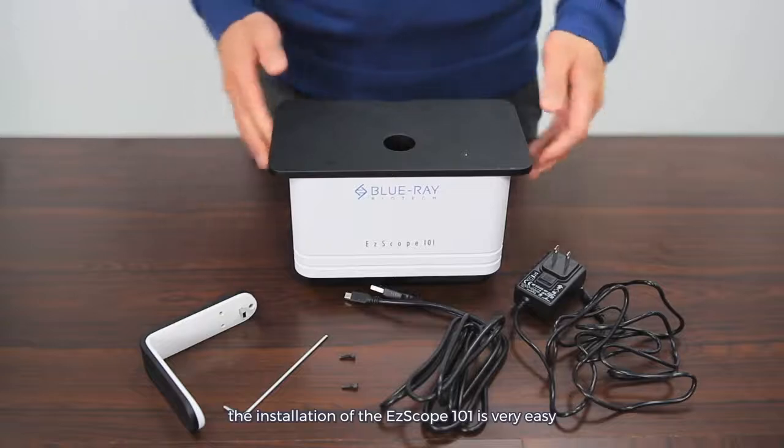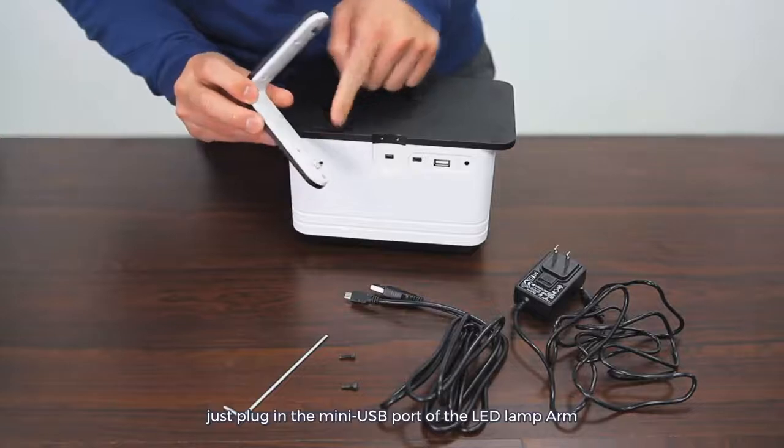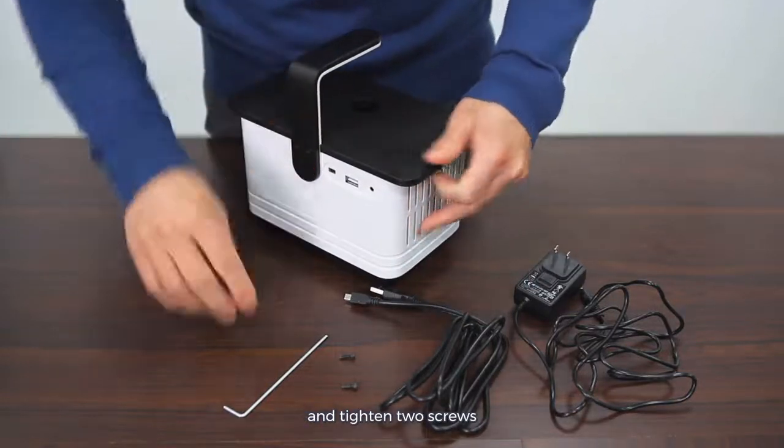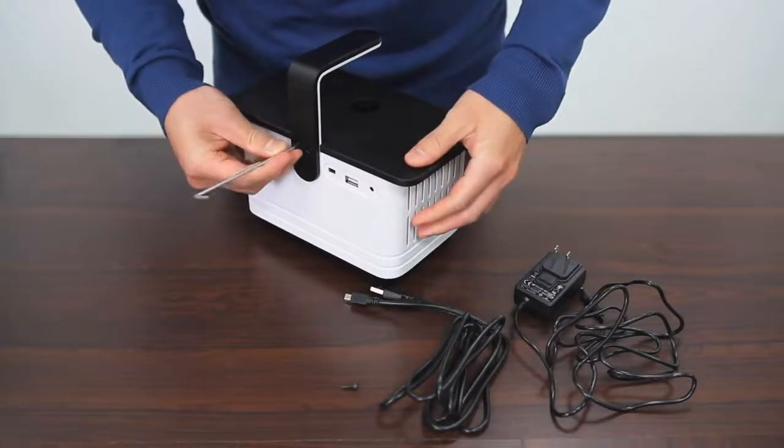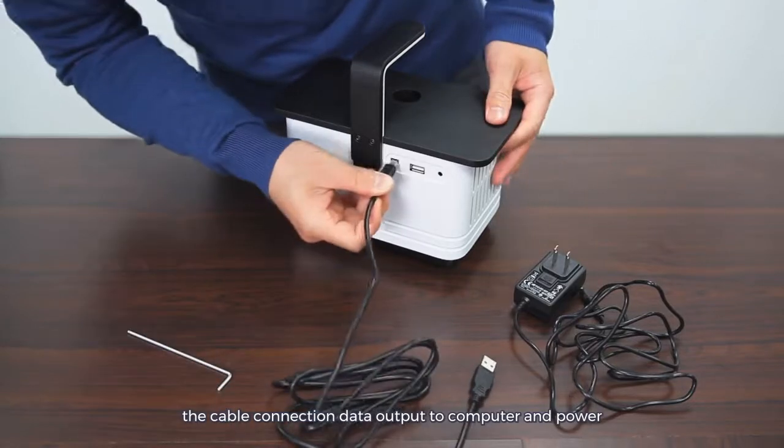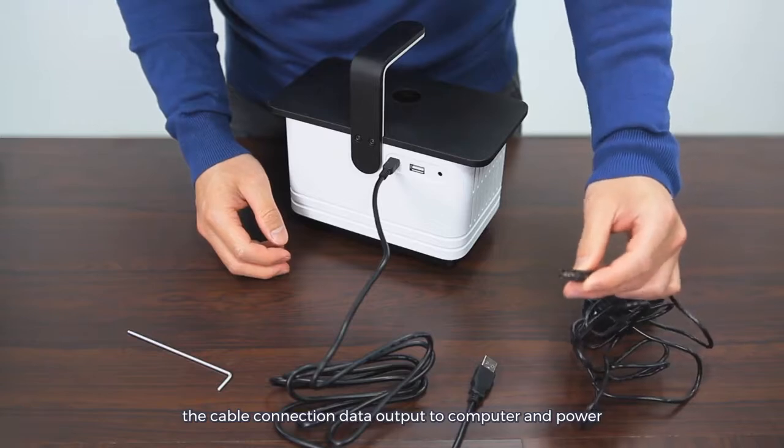The installation of the EZscope 101 is very easy. Just plug in the miniUSB port of the LED lamp arm and tighten two screws, the cable connection, data output to computer, and power.